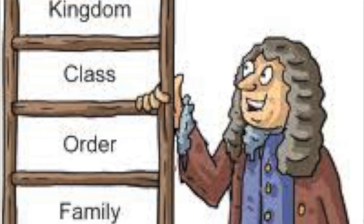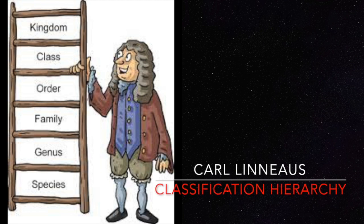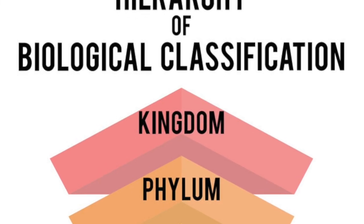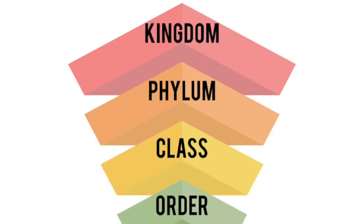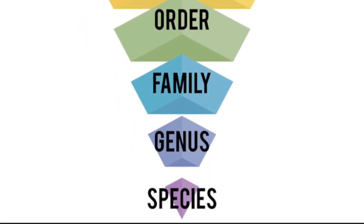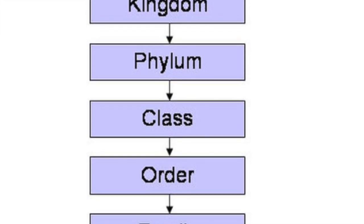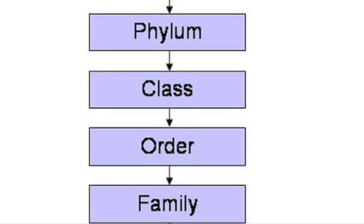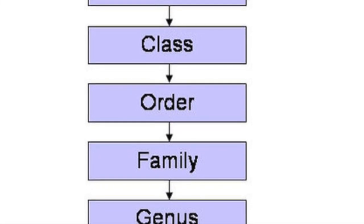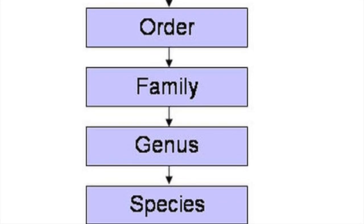Carl Linnaeus took this a step further when he developed his classification hierarchy. This hierarchy starts with the kingdom, which is the highest and most general level. As we go through all of the levels, the living things become more similar. The seven levels are: kingdom, phylum, class, order, family, genus, and species.